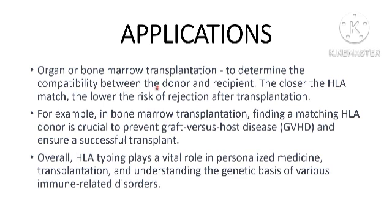In the context of organ or bone marrow transplantation, HLA typing is performed to determine the compatibility between the donor and the recipient. The closer the HLA match between the donor and the recipient, the lower the risk of rejection of the transplantation. For example, in bone marrow transplantation, finding a matched HLA donor is crucial to prevent graft versus host disease and ensure a successful transplant. HLA typing is usually carried out using molecular techniques such as polymerase chain reaction and DNA sequencing to identify the specific alleles.